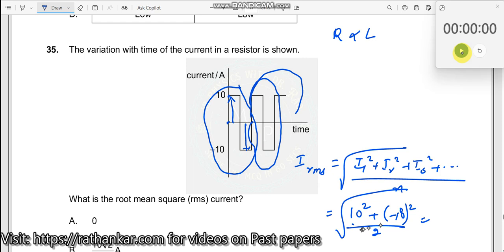Then take the square root which should now be equal to 10 square is 100 plus another 100 divided by 2. It is inside the root over here.